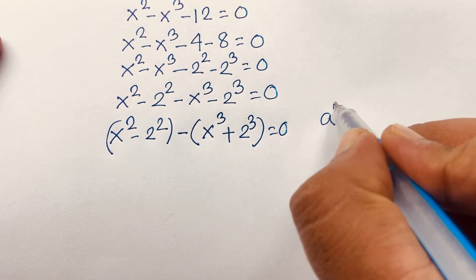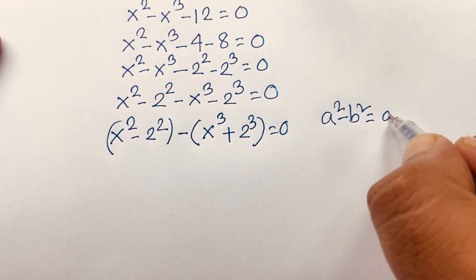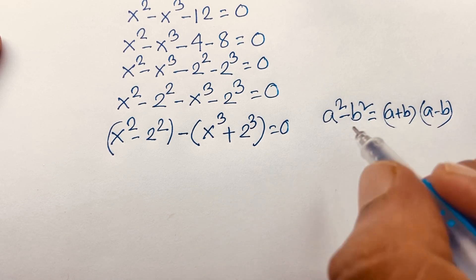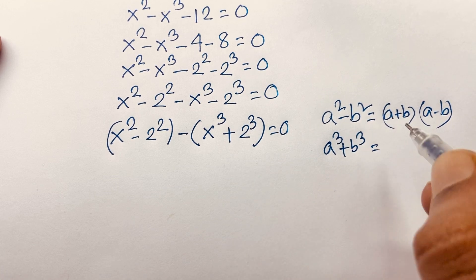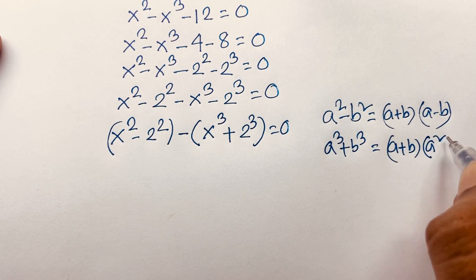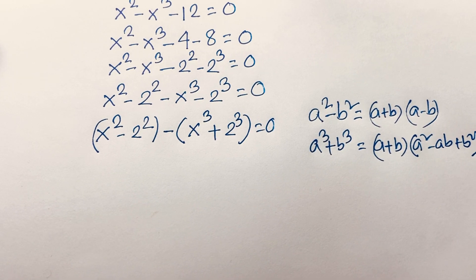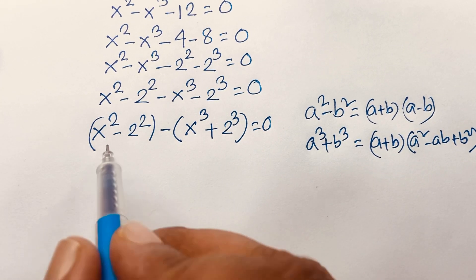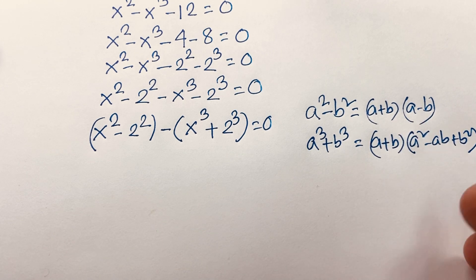We know the identity a squared minus b squared equals (a + b)(a − b), and also a cubed plus b cubed equals (a + b)(a squared minus ab plus b squared). Applying both these rules to our equation gives us the factored forms.